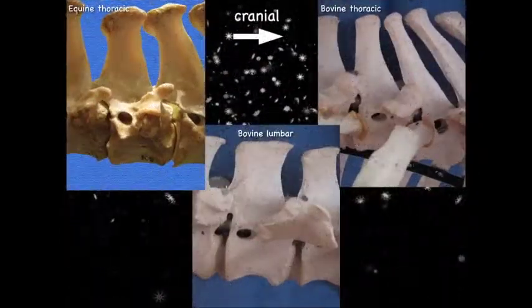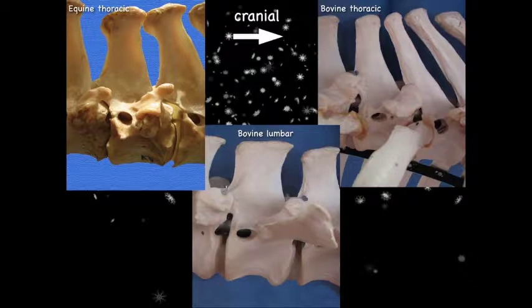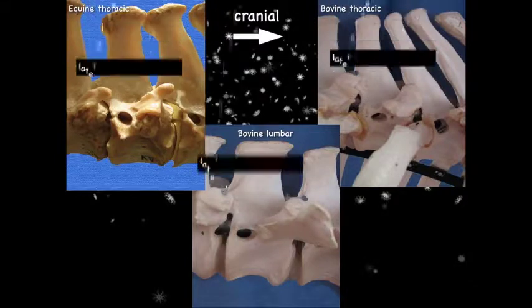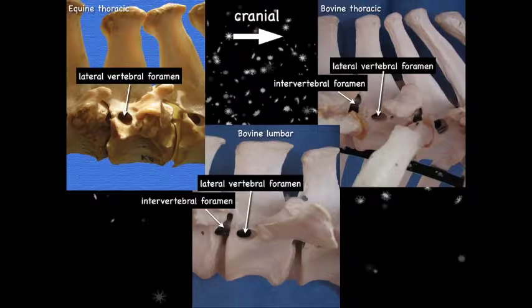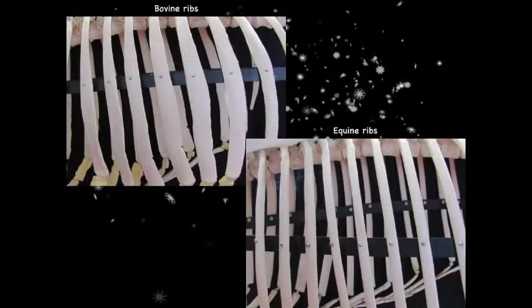In the equine and bovine thoracic region we can see the lateral vertebral foramina; it appears more so in the bovine lumbar area. Interestingly, it's not consistent even on one side of a horse versus the other — we have a specimen where the lateral vertebral foramina is formed on one side but not the other. Also, not only are there more ribs in the equine, but the bovine ribs are much wider, flatter, and actually less curved.